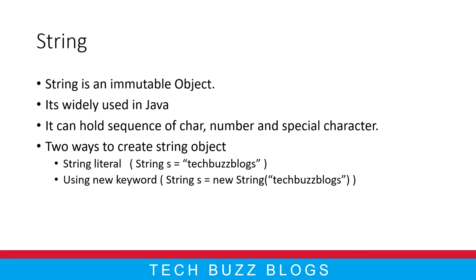Hi guys, welcome back. In this video we are going to discuss Java String. Basically, String is playing one of the major roles in Java. Let's see why that is. So the definition: String is an immutable object. You may have doubts about what immutable means — I will tell you clearly. The second point is it's widely used in Java.